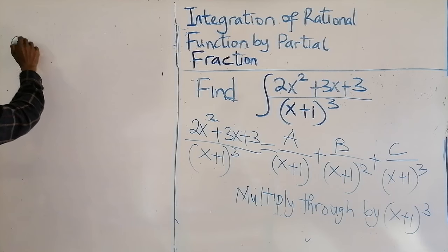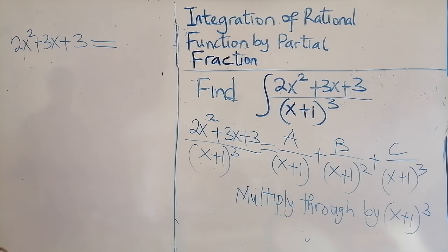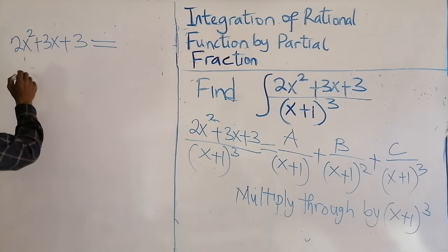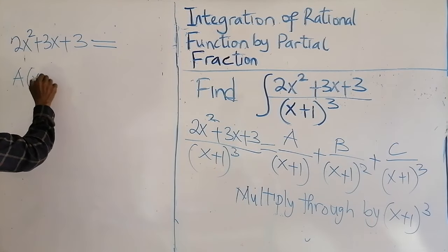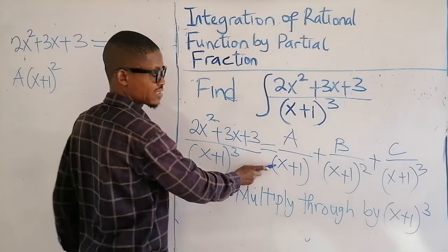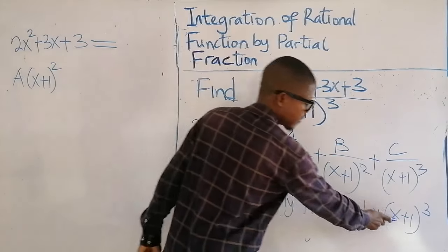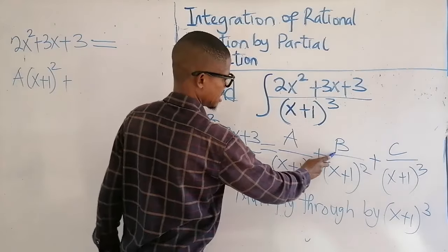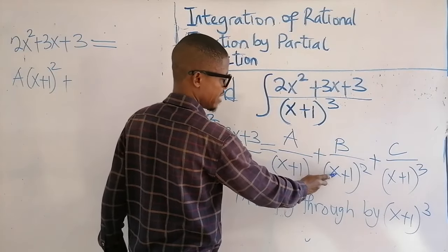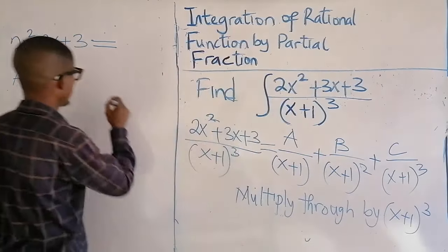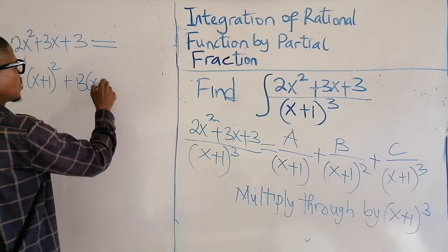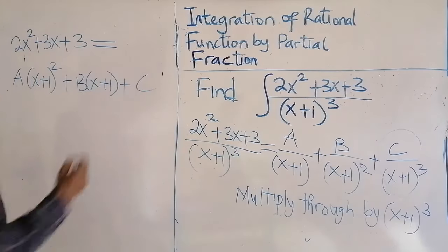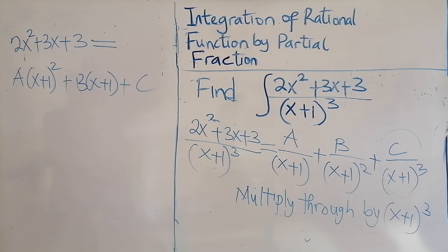That would give us just the numerator on the left. On the right-hand side, each fraction times the common factor: A times (x+1)², since you have one of these and three of these, leaving two. Plus B times (x+1), since you have two of these and three of these, leaving one. Plus C, since that fraction times the common factor cancels completely.